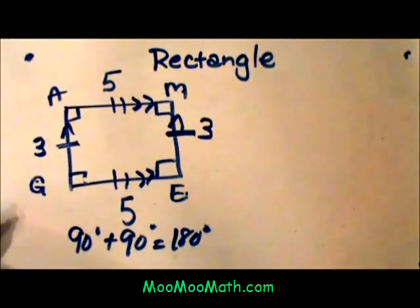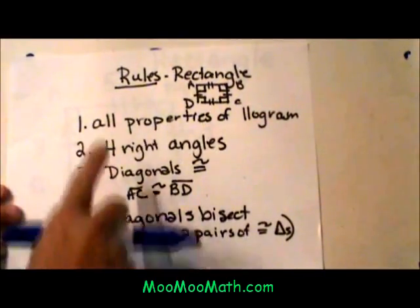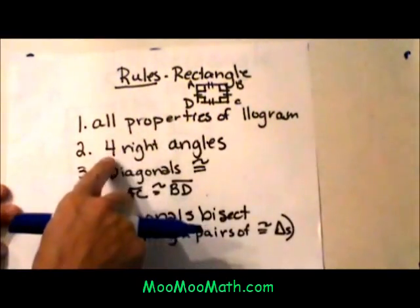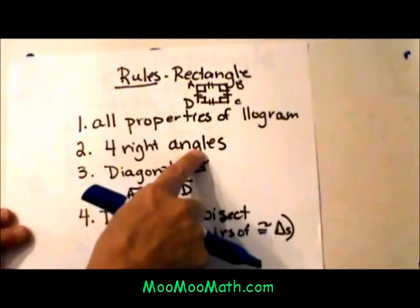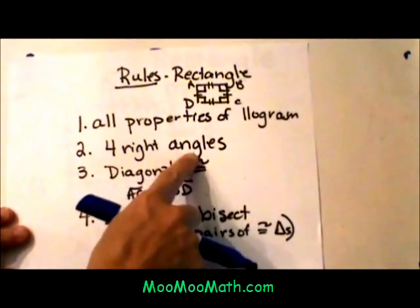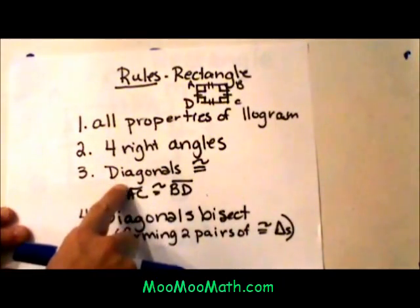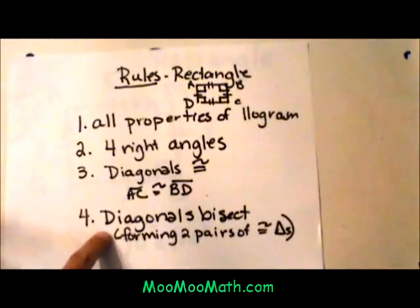Now, the rectangle has a couple extra properties. They do have all the properties of a parallelogram, but they also have four right angles that distinguish it as a rectangle. And the diagonals have two special properties, too.